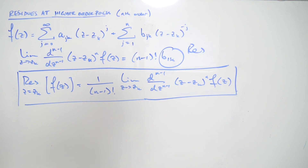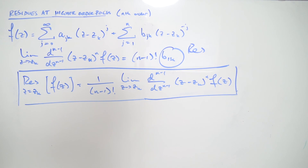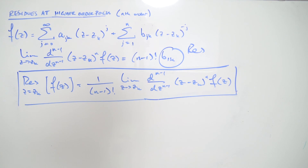This formula only applies to finite order poles — there is no general formula for essential singularities; you'd need to use the Laurent series expansion directly. Even for higher order poles like order five, you probably don't want to use this formula since you'd have to differentiate four times. In most cases for higher order poles and essential singularities, it's best to recover the residue directly from the Laurent series. That's it for this video — hope you enjoyed it, have a wonderful day!